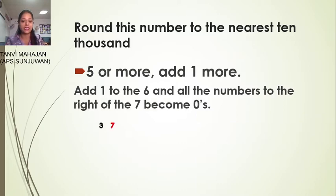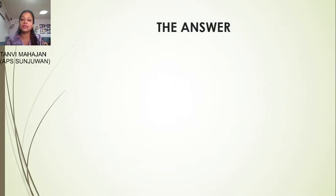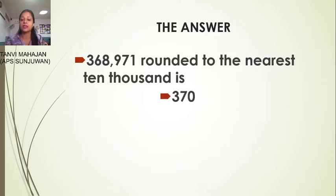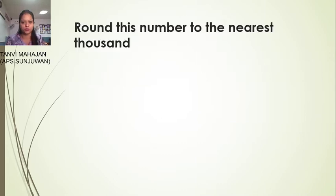So the answer is: three, seven, zero, zero, zero, zero. The number 368,971 rounded to the nearest ten thousand is 370,000.